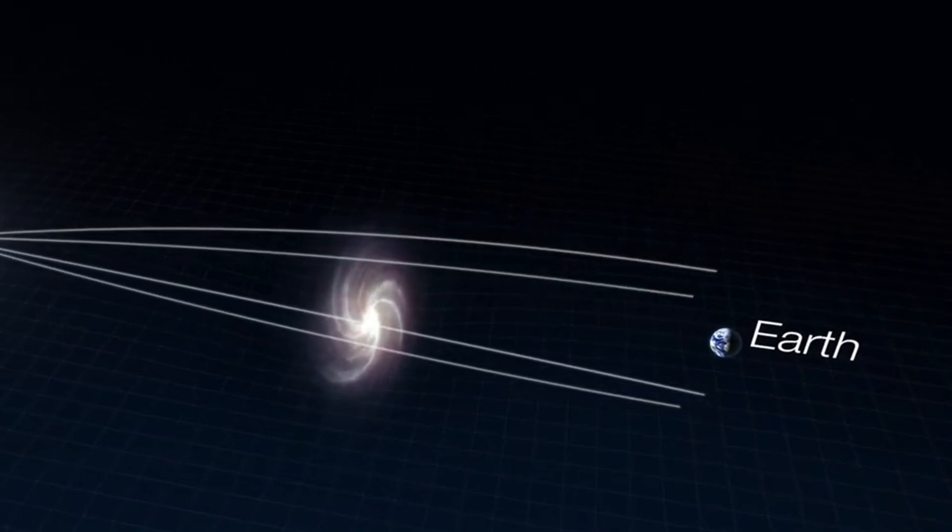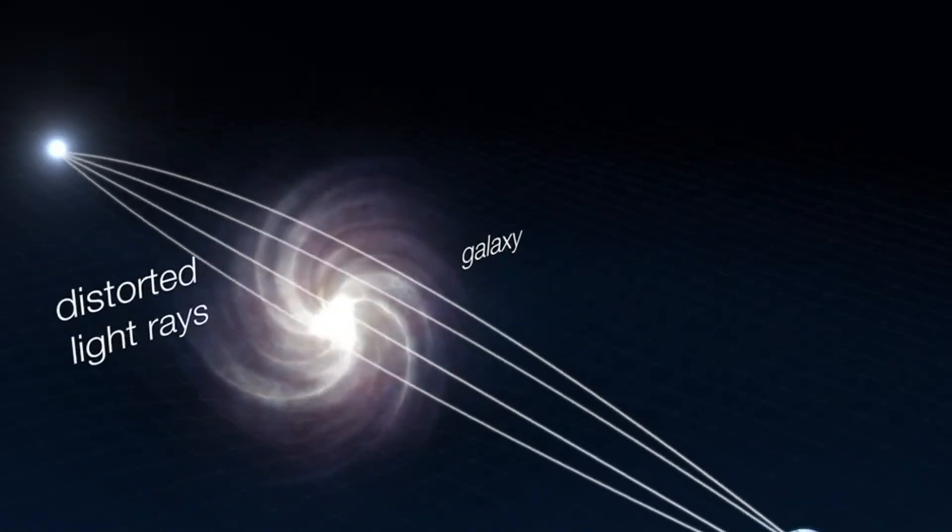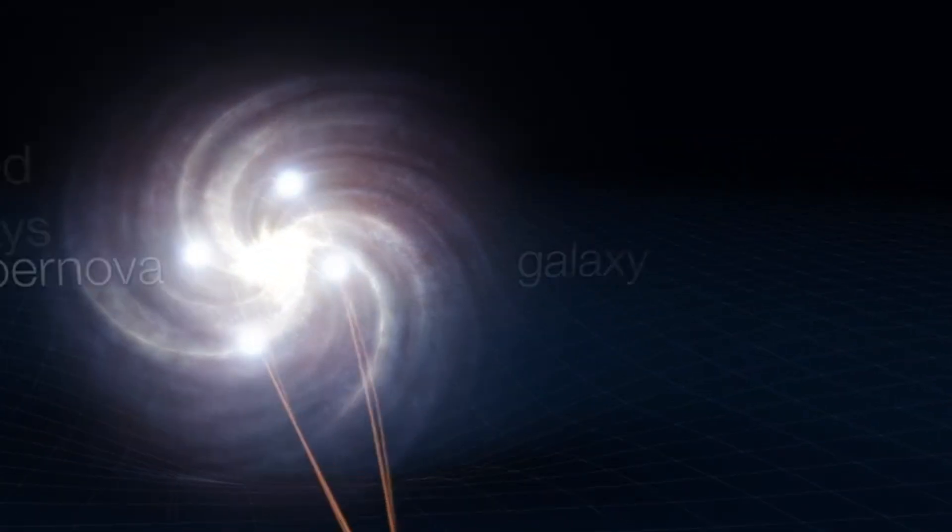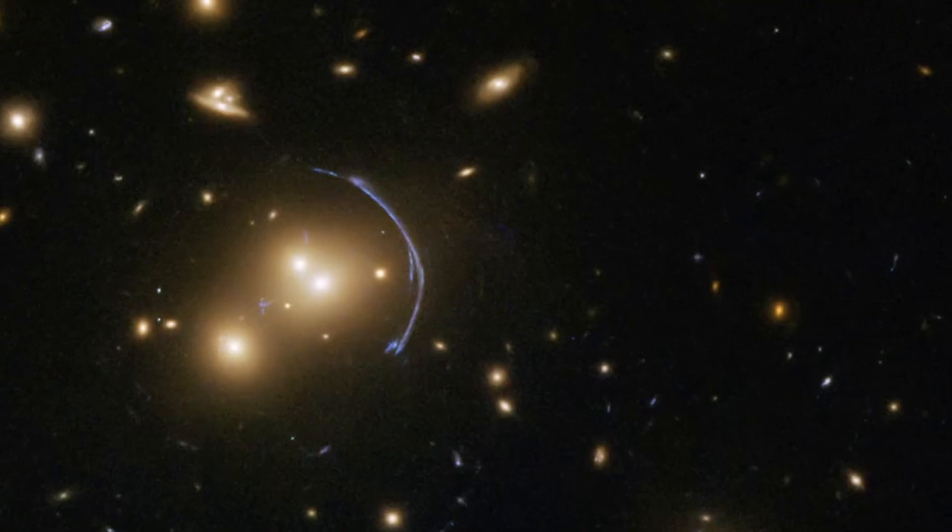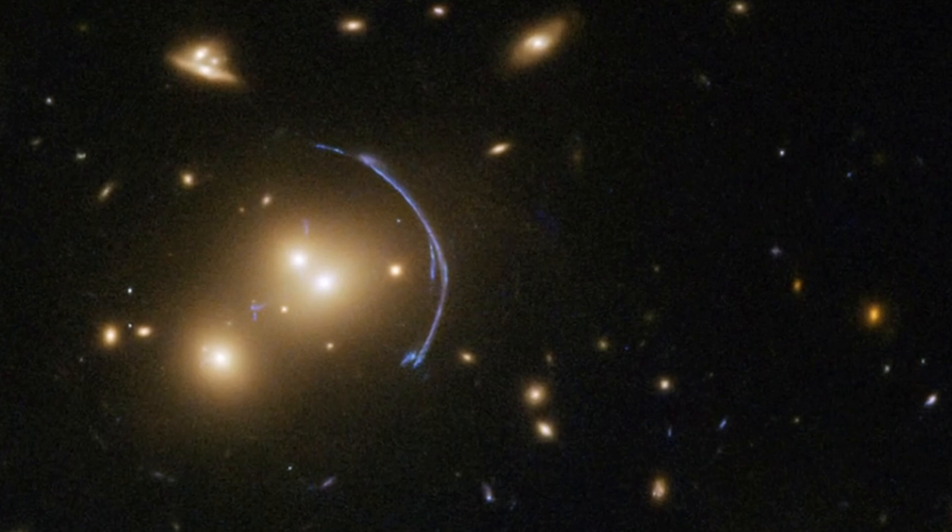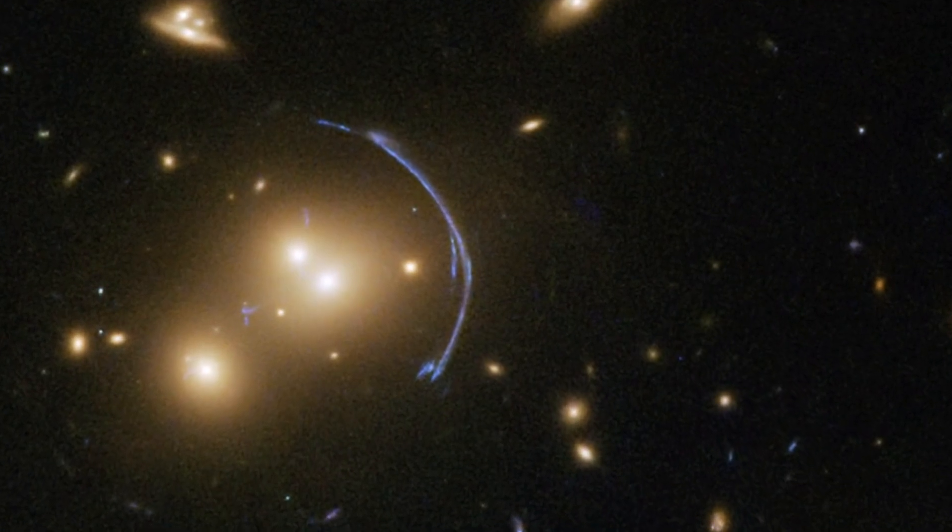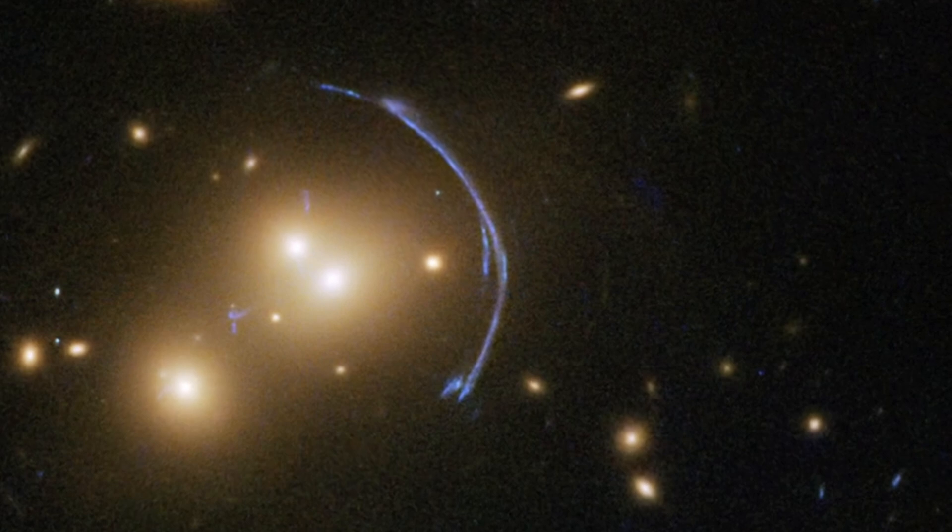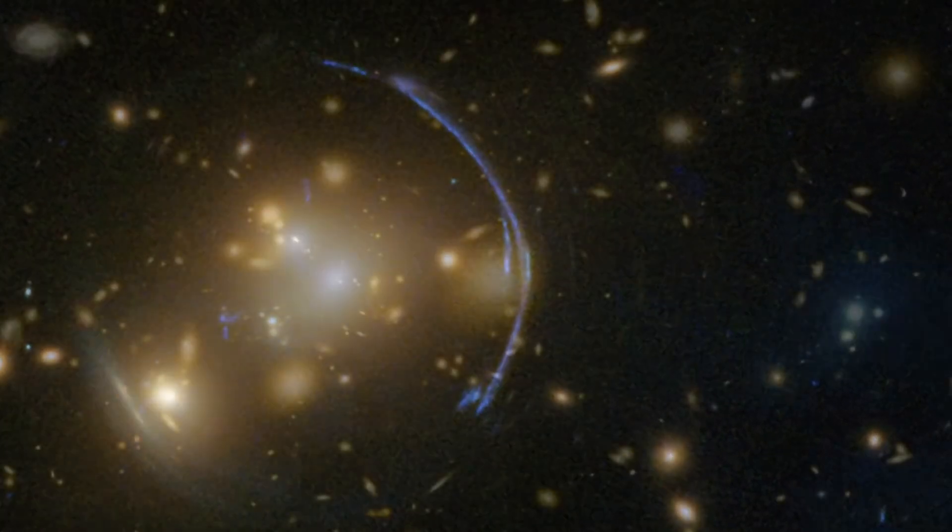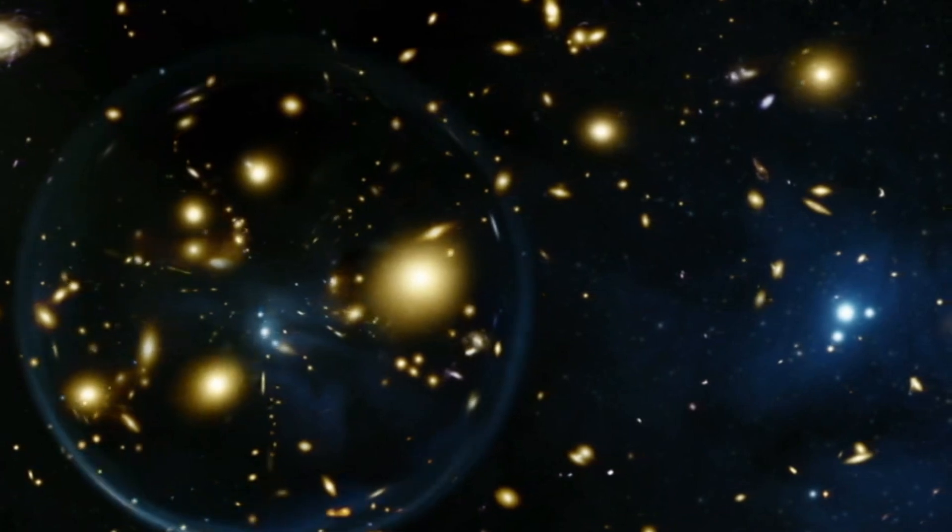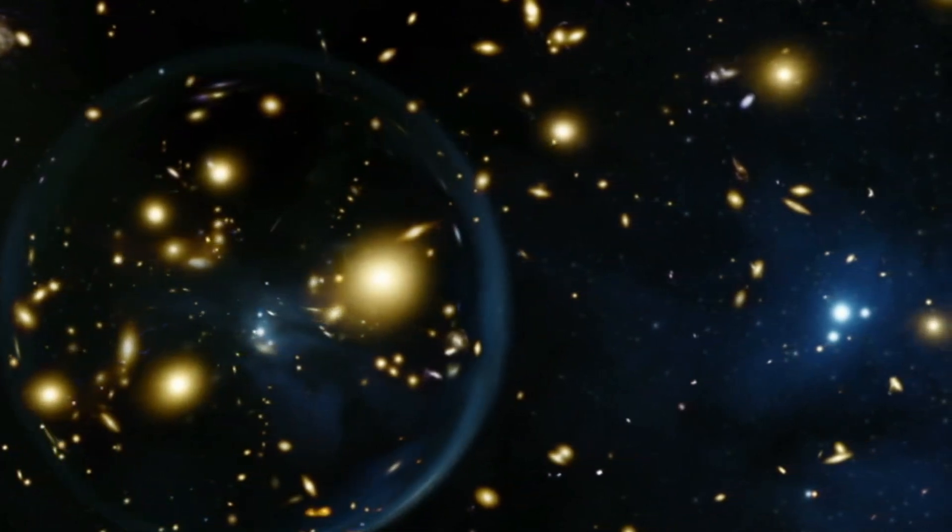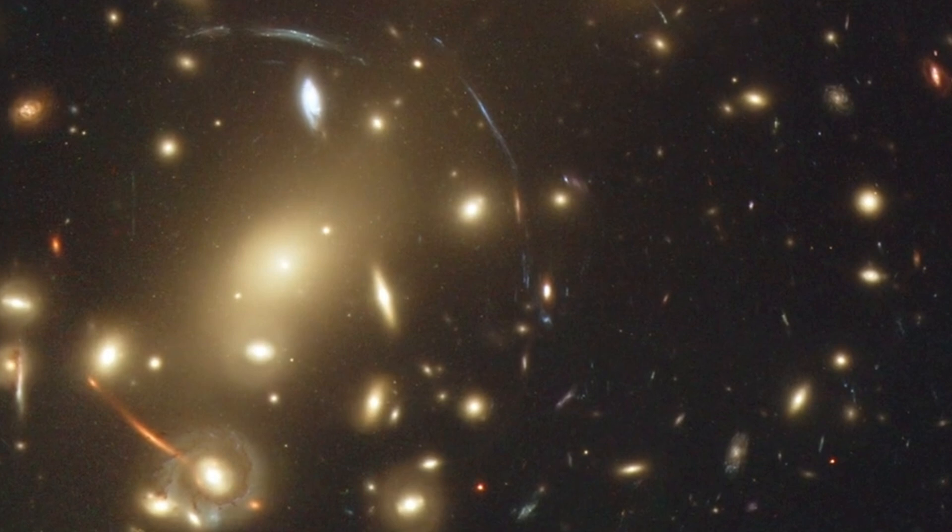Additionally, the James Webb Space Telescope has taken a fresh picture of Earendel, the farthest star yet discovered. The JWST was used by scientists to monitor this star in more detail. This star emitted the light we now see some 12.9 billion years ago, so it exists in a realm of space just 900 million years after the Big Bang.